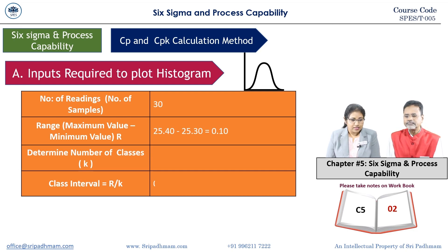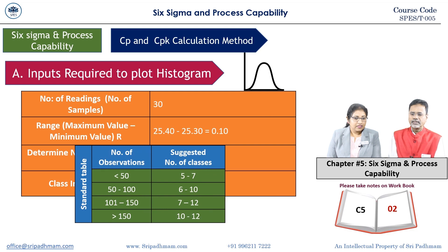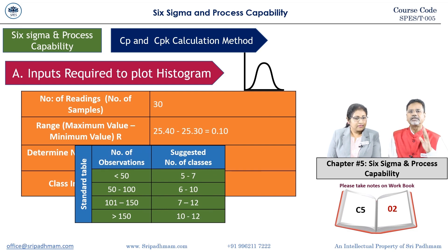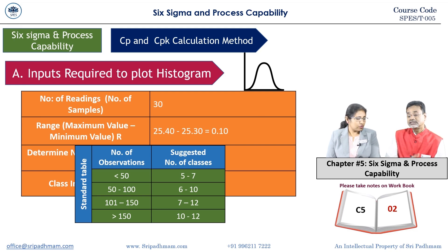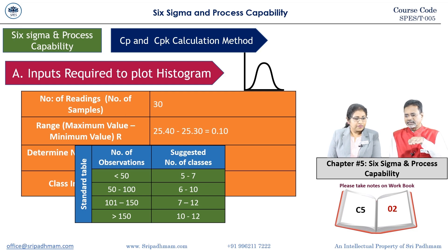For the class interval, use the internationally recognized standard table. For up to 50 samples, select a minimum of 5 groups and a maximum of 7 groups. So for 50 samples, you may select either 6 or 7 groups.